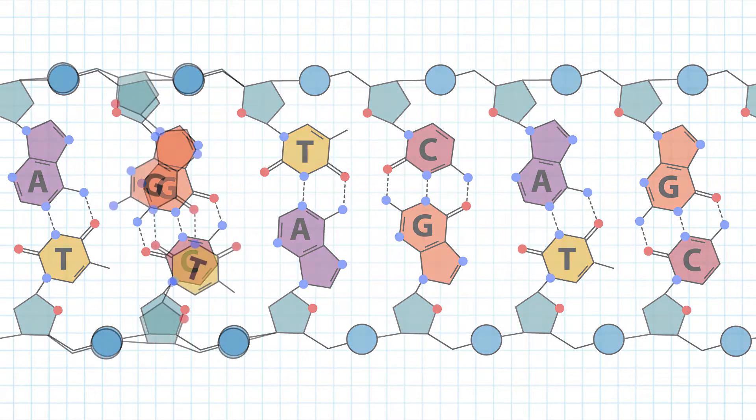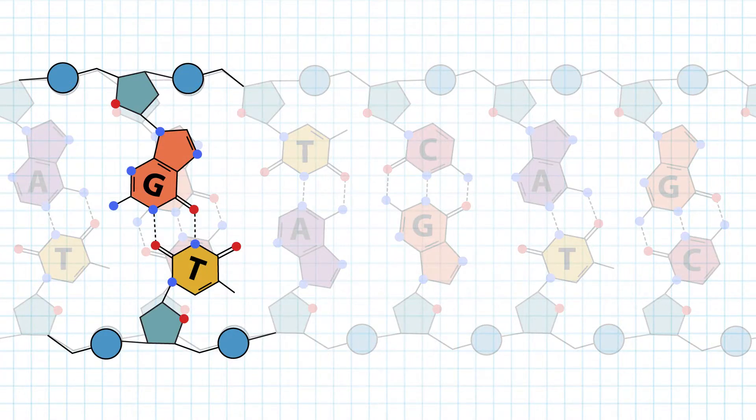Other base pairs, like GT for example, do not have the same geometry, cannot form strong hydrogen bonds and disturb the helix.